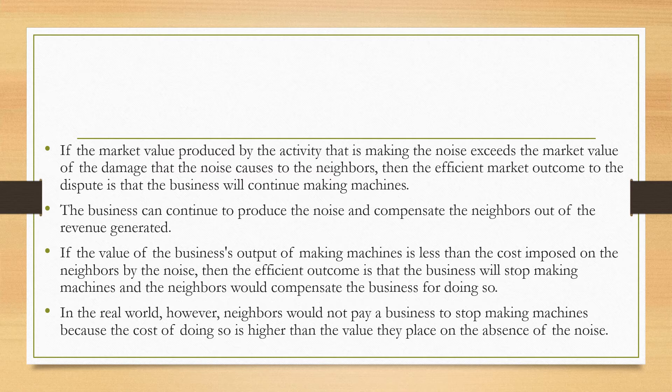If the market value produced by the activity — that is, making the noise — exceeds the market value of the damage the noise causes to the neighbors, then the efficient market outcome is that the business will continue making emissions. The business in this case can continue to produce the noise and compensate the neighbors out of the revenue generated. On the other hand, if the value of the business output is less than the cost imposed on the neighbors by the noise, then the efficient outcome is that the business will stop and the neighbors would compensate the business for doing so.